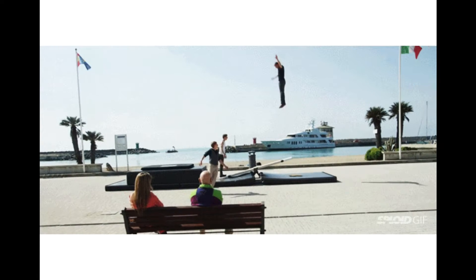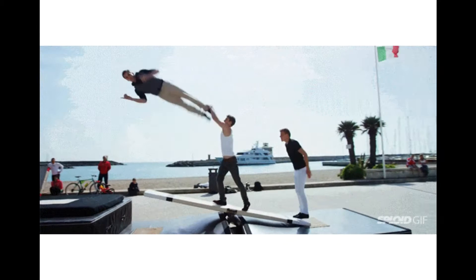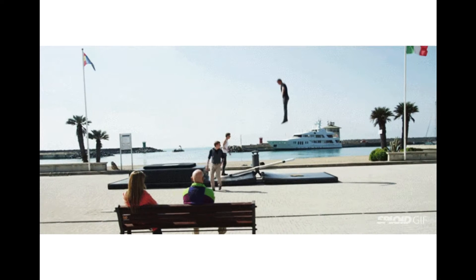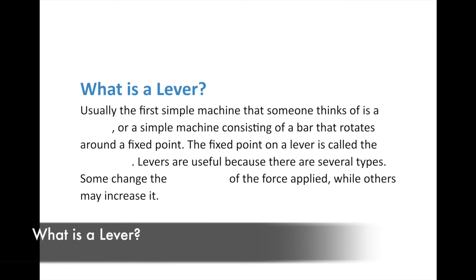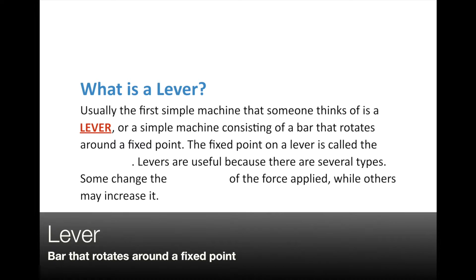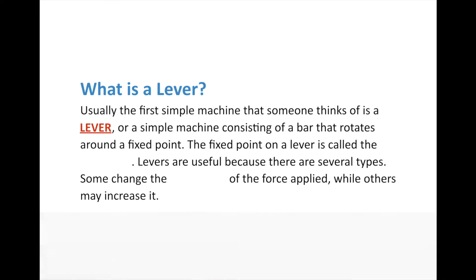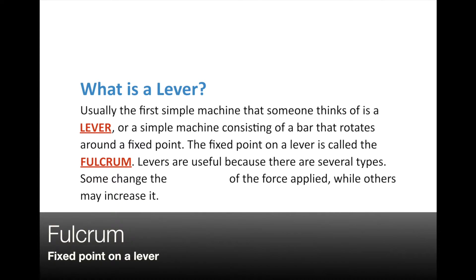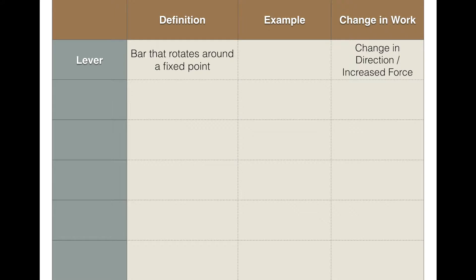Now let's talk about simple machines. When we think about simple machines, we usually think first of a lever — a simple machine consisting of a bar that rotates around a fixed point. There are several different types of levers, but what they all have in common is a fixed point called the fulcrum. The fulcrum is what the lever pivots around. Levers are useful because some change the direction of the force while others increase the force, allowing you to lift more mass than you otherwise could.